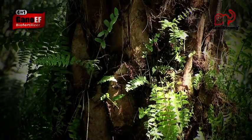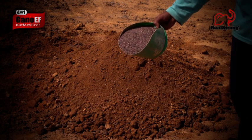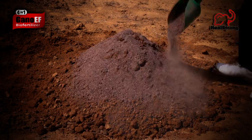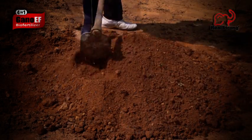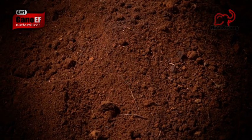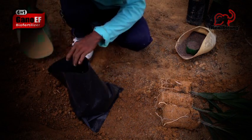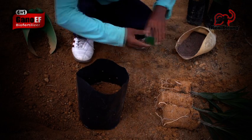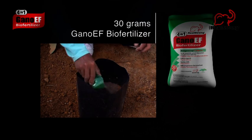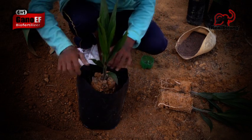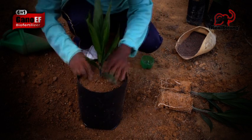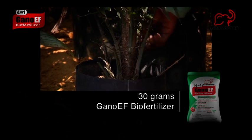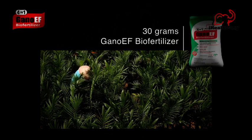Gano EF is easy to apply at any stage of growth. At the seeding stage, mix one part Gano EF to 20 parts of soil. Fill a large polybag halfway with the same one-part Gano EF to 20-part soil mixture. Pour in 30 more grams of Gano EF. Place the seedling into the polybag. Add more of the original Gano EF soil mixture until the bag is full. Pour in another 30 grams per seedling over the next 8 to 9 months.